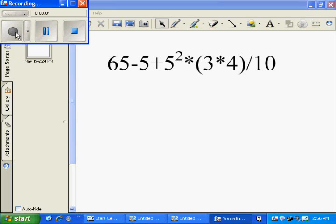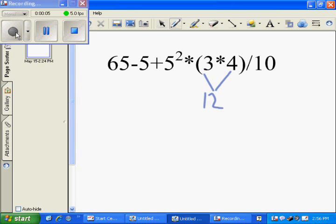First in our problem is P for parentheses. You do the parentheses, which would be 3 times 4 equals 12. And you would bring down the rest of the problem in the order of operations.